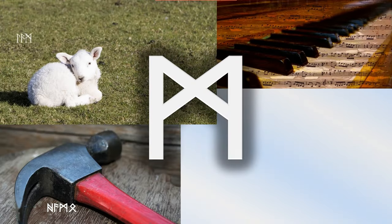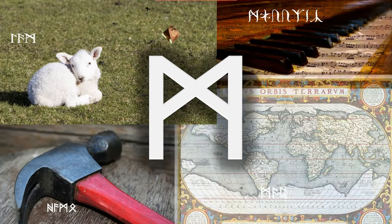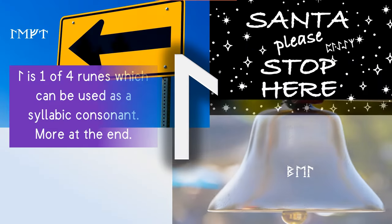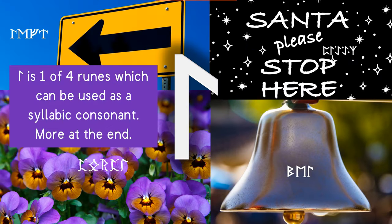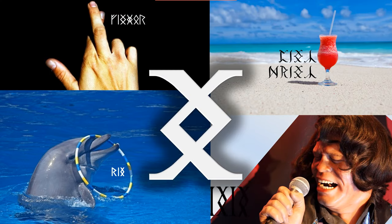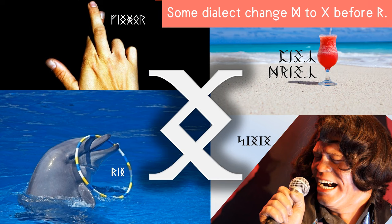Mann makes the m sound as in music, man, map, lamb, and hammer. Lagu makes either the clear l sound or the dark all sound as in left, please, bell, and purple. Ing makes the ng sound as in ring, singing, finger, or a pink drink.